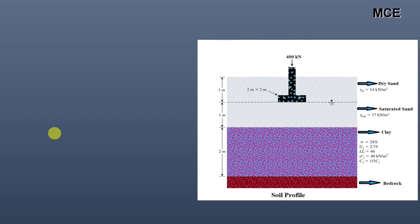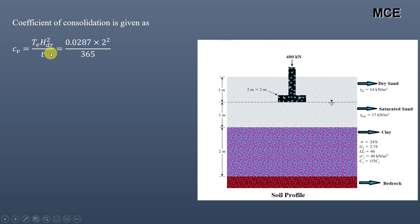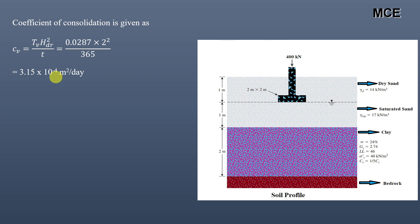The coefficient of consolidation is Cv = Tv × Hd² / t. The clay layer is singly drained because bedrock is at the bottom, so the maximum drainage path Hd = 2 meters. For t = 365 days (12 months), Cv = 3.15 × 10⁻⁴ m²/day.